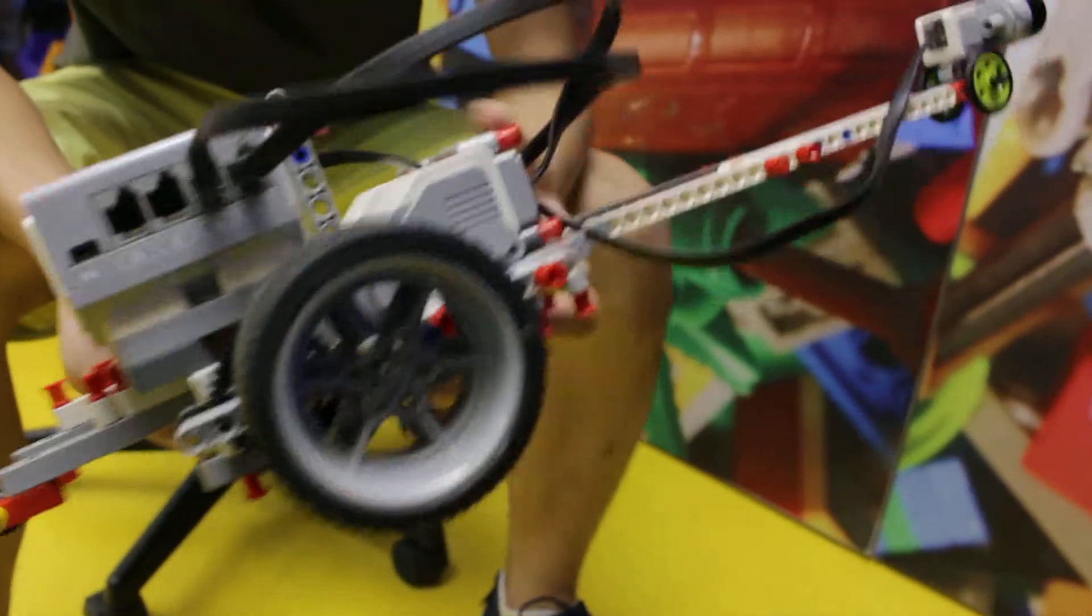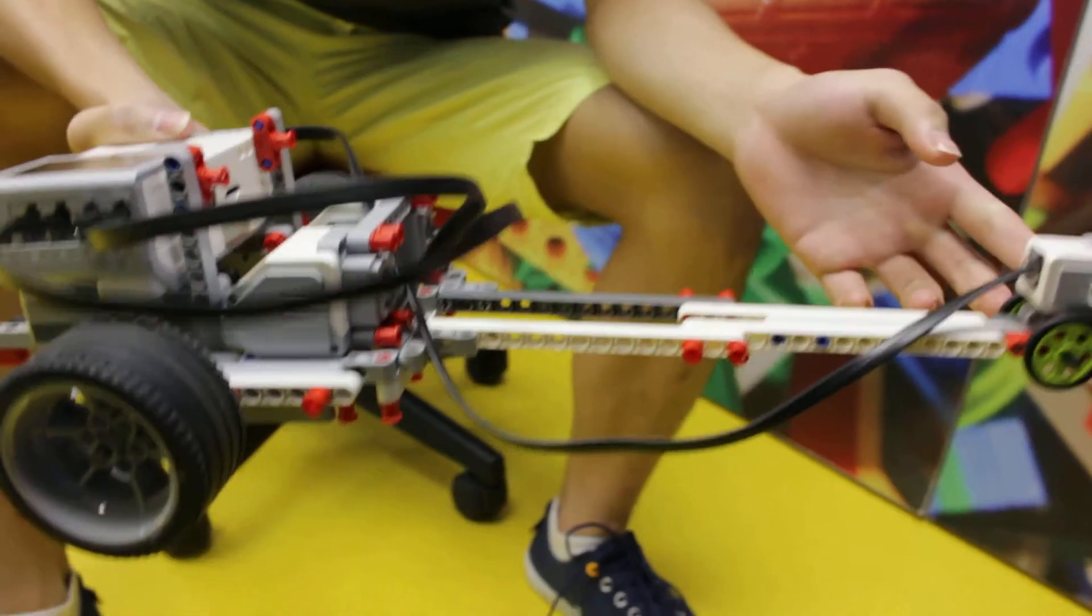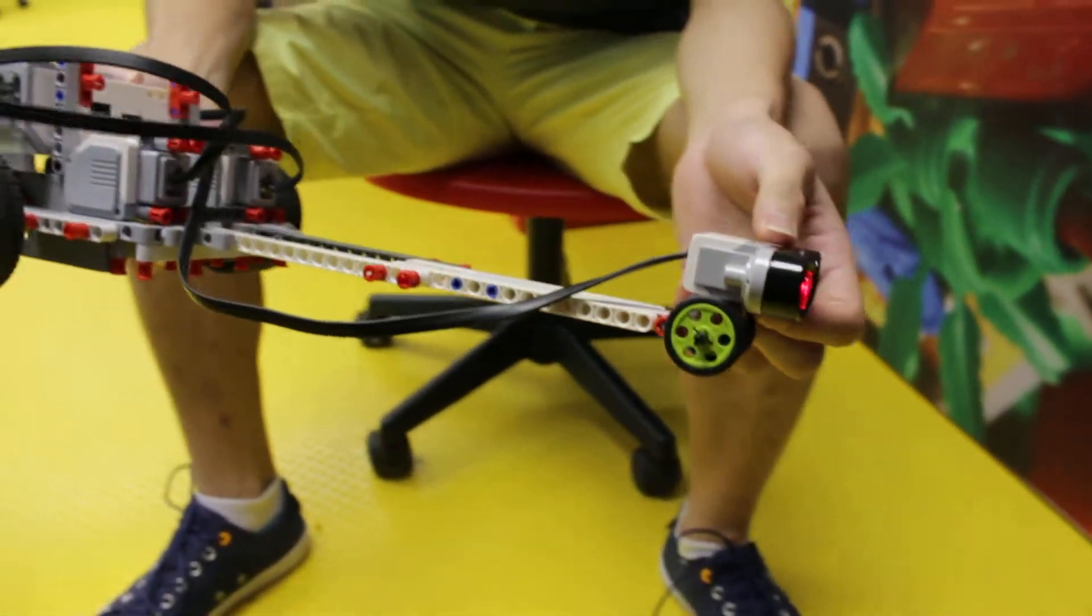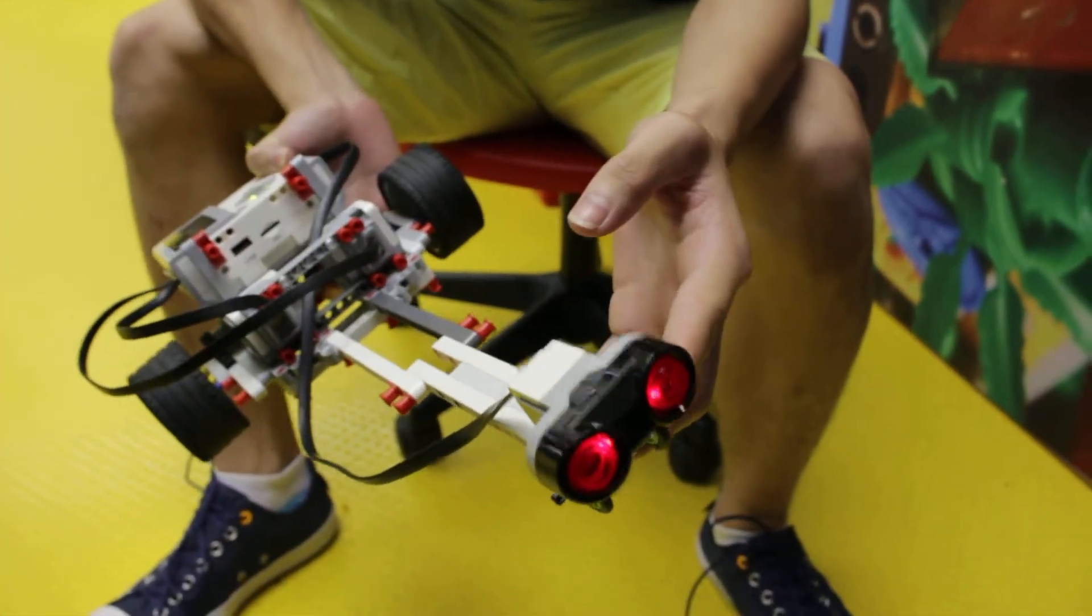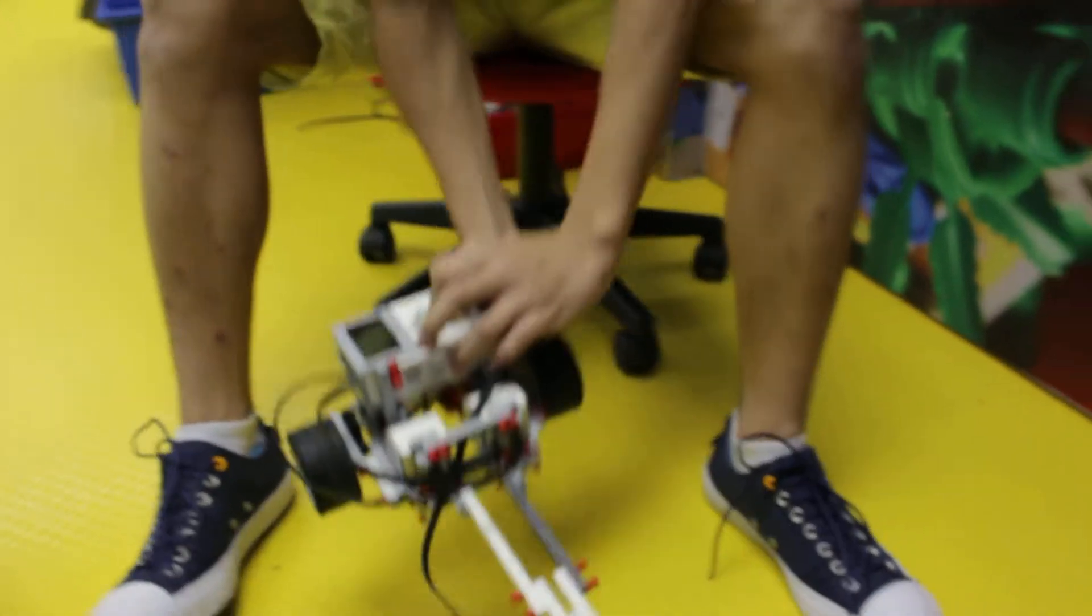The only difference between this dragster and a top-field dragster is an ultrasonic sensor in front to prevent it from running into the wall.